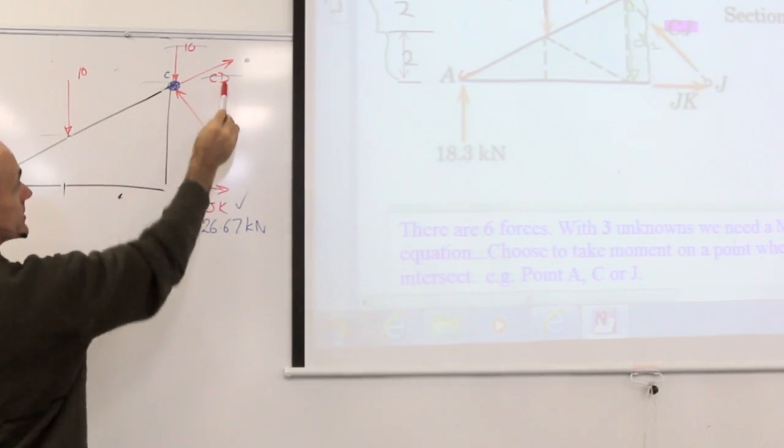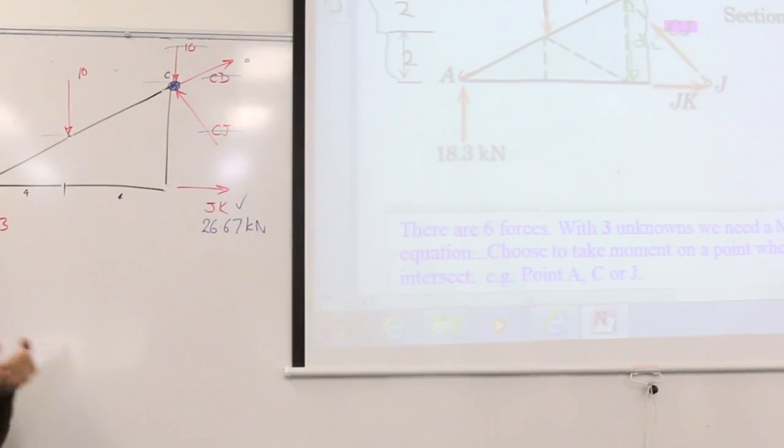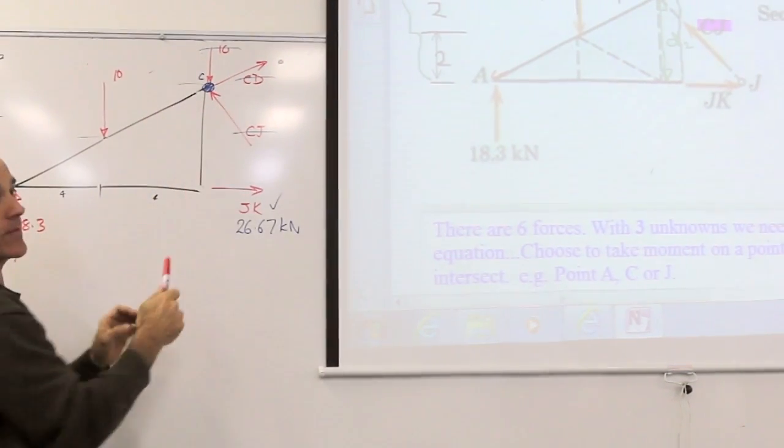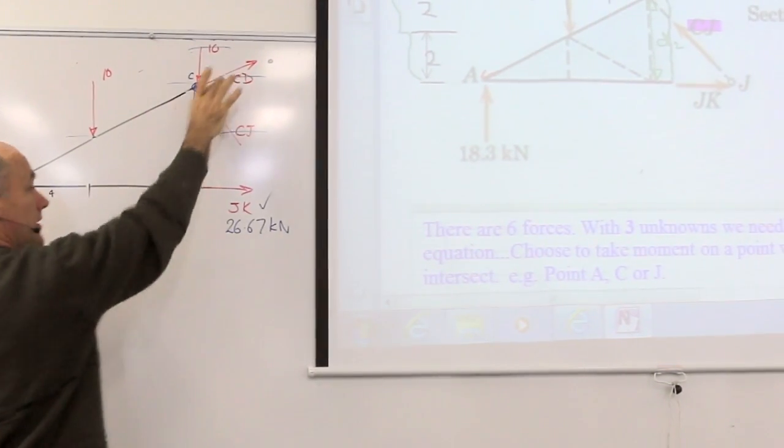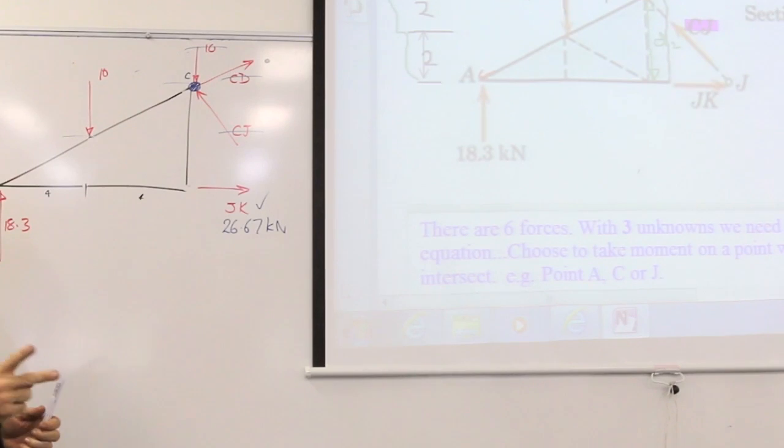I'm left with two unknowns, CD and CJ. How do I solve those two? Well, I could use a moment in different places to solve them, but there's a quicker way. We're down to two unknowns. When we have two unknowns, we can do a force polygon. Let's do a force polygon.